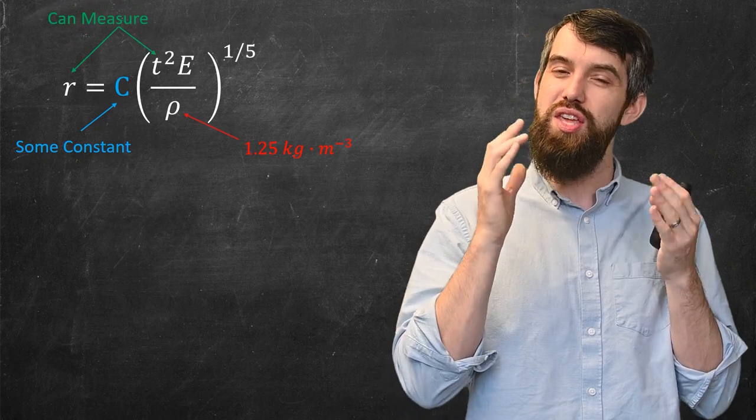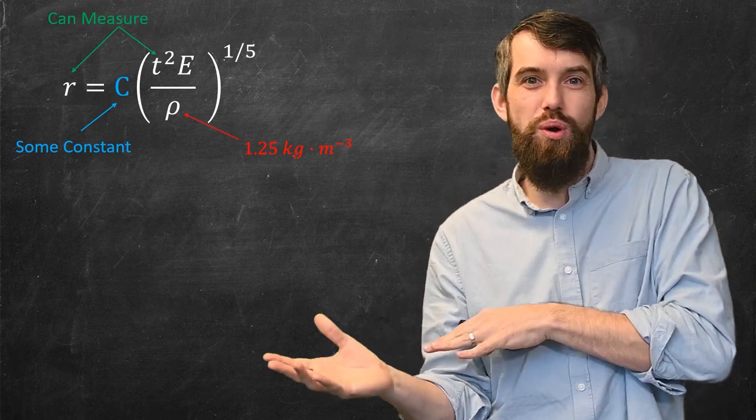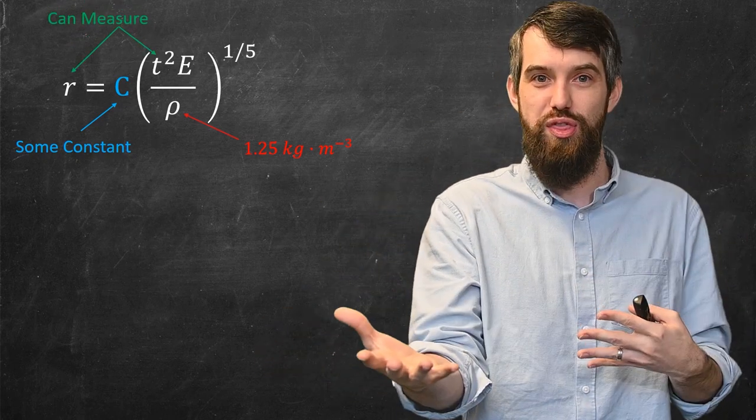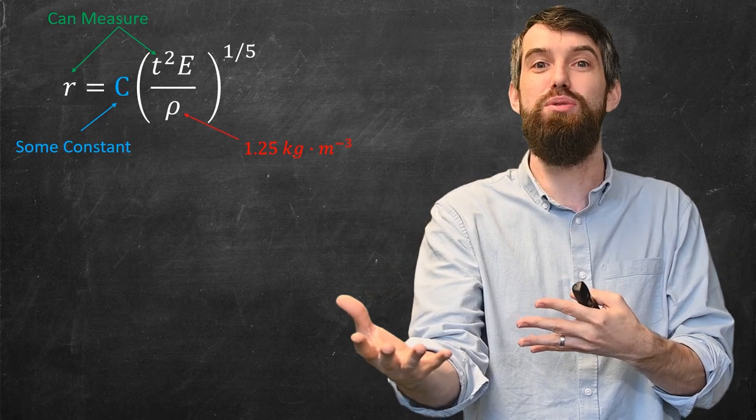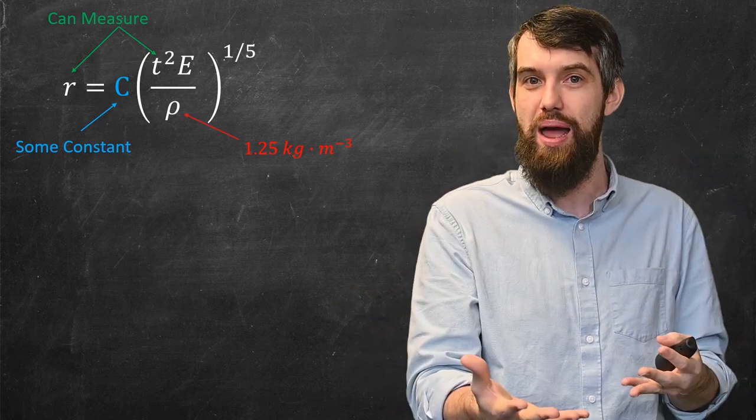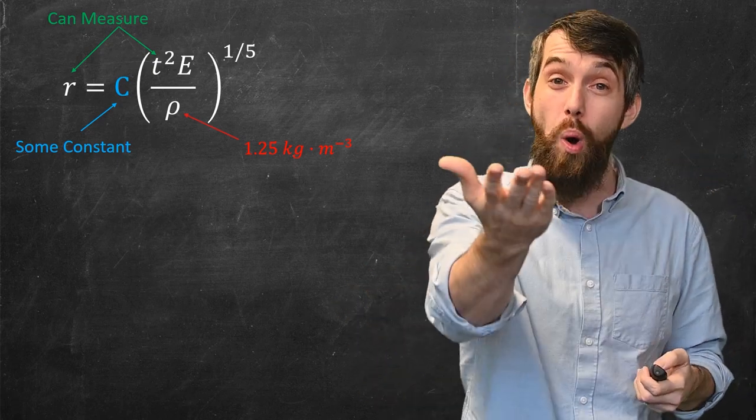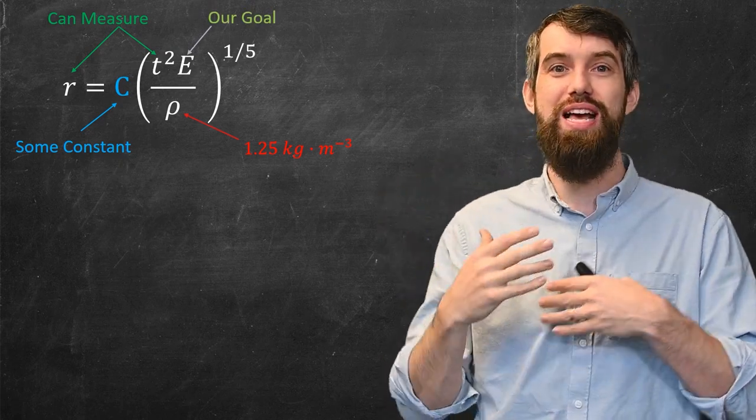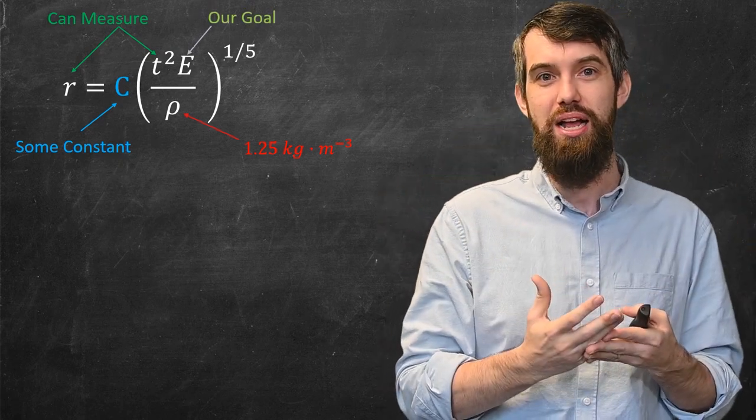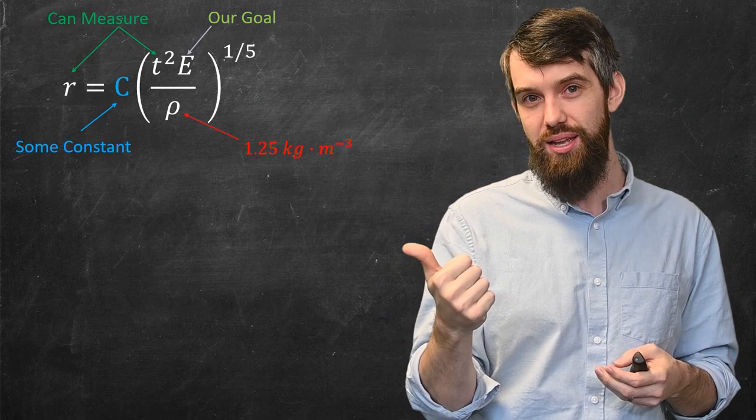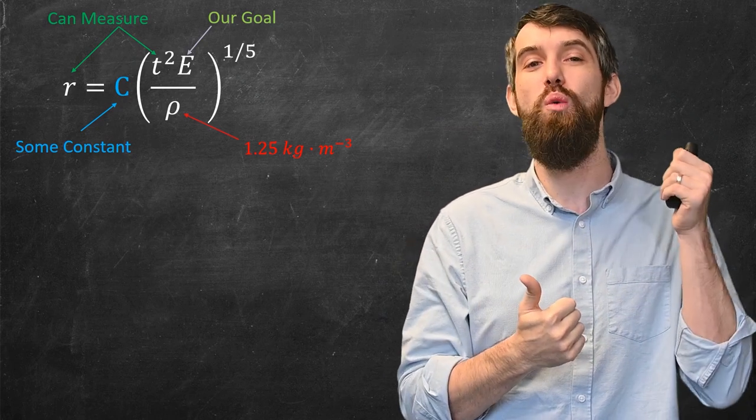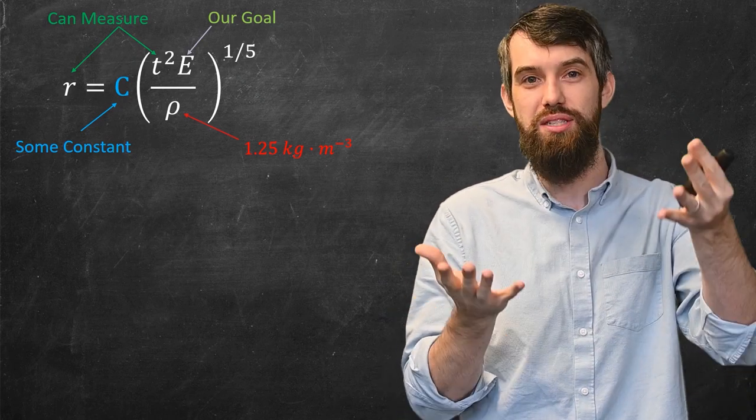Then I can look at the r and the t, and if you recall back at the beginning, r and t were the things we knew. That was the things that Taylor was able to read off from all of the photographs. And then the thing that we want to compute out, that is our energy. That's the last remaining piece of the puzzle. So if I can get the constant, then I'll be able to compute out what the energy is, because everything else is known.